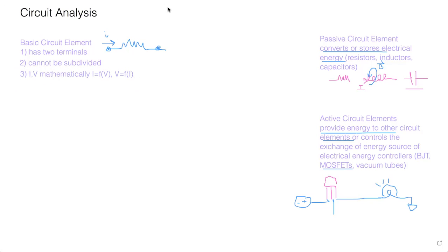For example, if there's a voltage drop of 10 volts across a resistor, I could write the current as a function of that 10-volt drop. And if the current is 10 milliamps, I could write the voltage as a function of current. Those are the three ideas that basic circuit elements must follow.